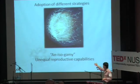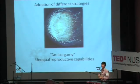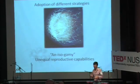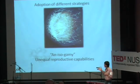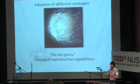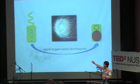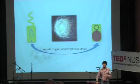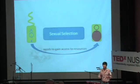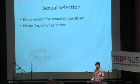This is what we call anisogamy — meaning not same gametes — and basically there is a different reproductive capability between these two sexes. So one sex needs to gain access to the resources of the other sex. This is what we have: sexual selection. Sexual selection can come in many different forms.